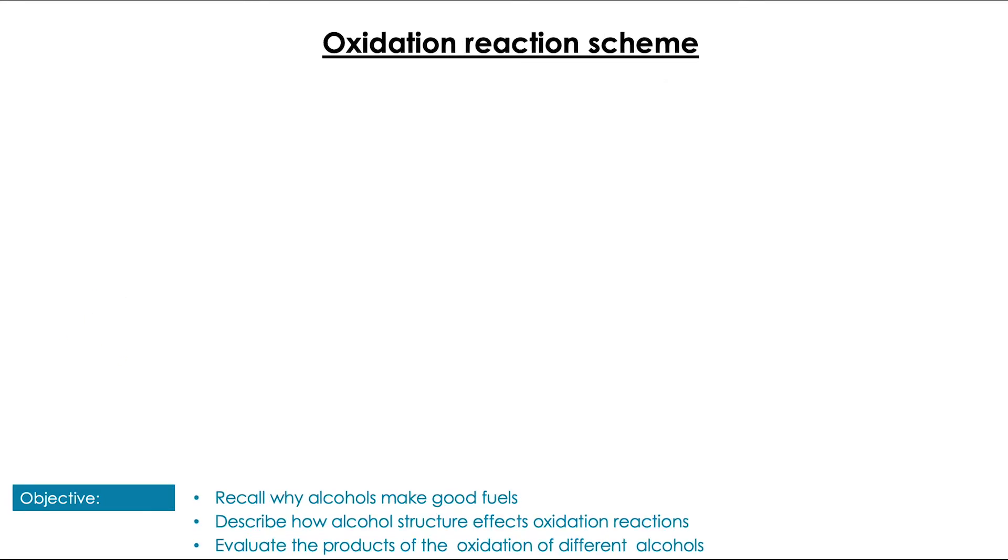The key to understanding the oxidation reaction scheme for alcohols is understanding the difference in reactivity between primary, secondary, and tertiary alcohols. Let's first consider a primary alcohol. Here we've got propan-1-ol, which is primary.